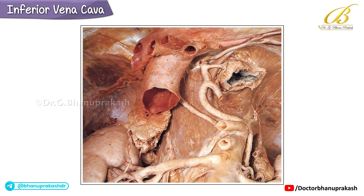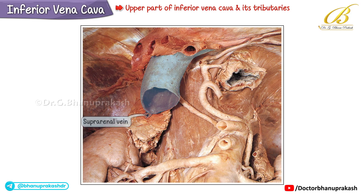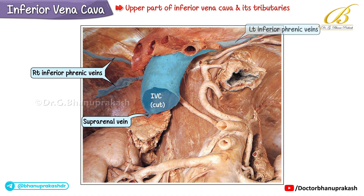This image shows the upper part of the inferior vena cava and its tributaries. On the right side, the suprarenal vein drains directly into the inferior vena cava. Both the right and left inferior phrenic veins also open into the inferior vena cava.